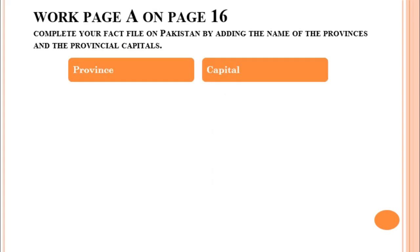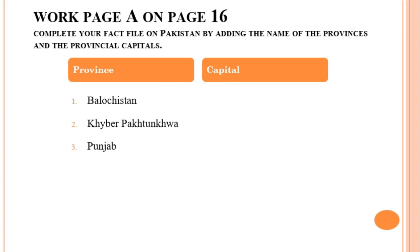Open page number 16 of your book. Let's start from Work Page A. Work Page A is: complete your fact file on Pakistan by adding the name of the provinces and the provincial capitals. In this question, first we will write the names of the provinces of Pakistan, and then in the second column we will write the names of the capitals. How many provinces does Pakistan have? Pakistan has four provinces.